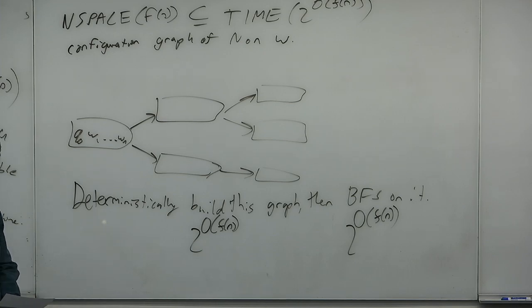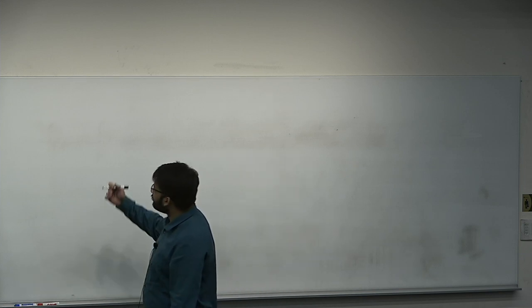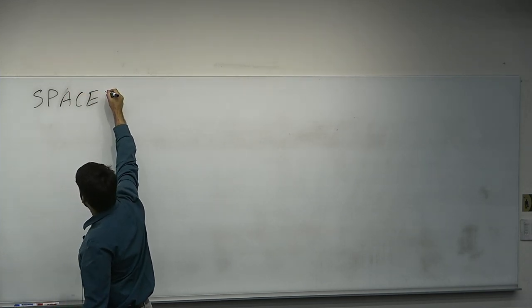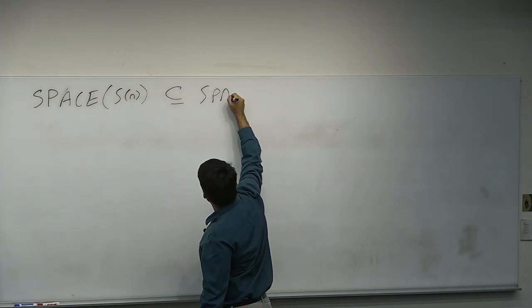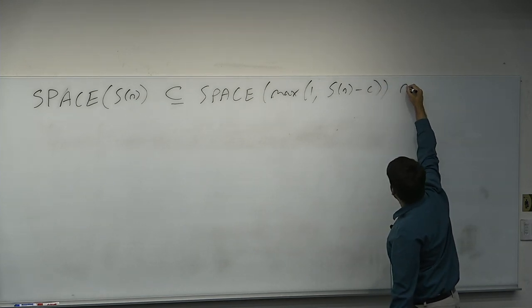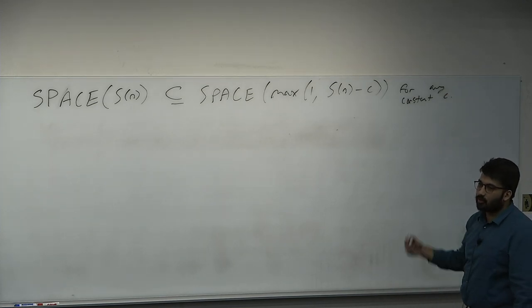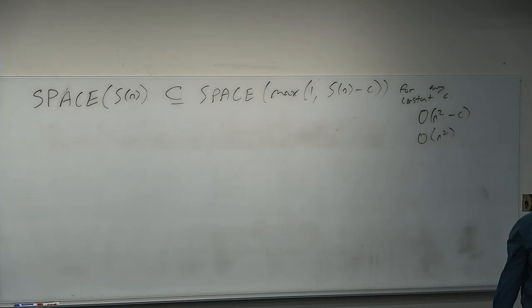I'll give you one more trivial space complexity theorem, and then we'll get on to Savitch's theorem. Part of the motivating reason we use big-O is there are too many machine-dependent things in the theory of algorithms that we want to abstract away from. Space(f(n)) — a machine with a space of f(n) bound can be simulated in space max(1, s(n) − c) for any constant c. What is O(n² − c)? That's just O(n²). The motivating reason we use big-O is that up to constant factors, you can speed up anything. This is called a speed-up theorem.